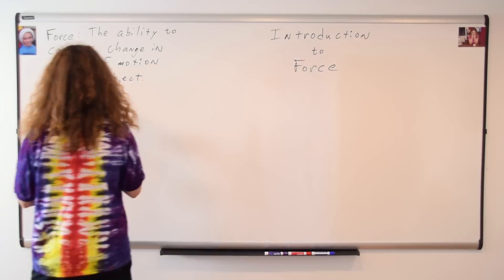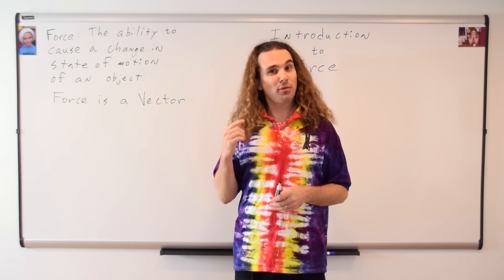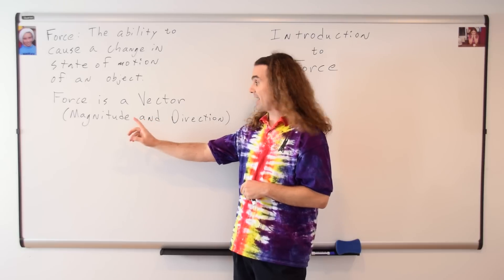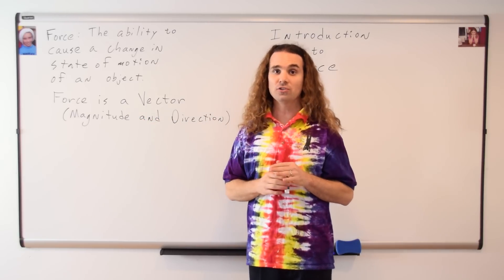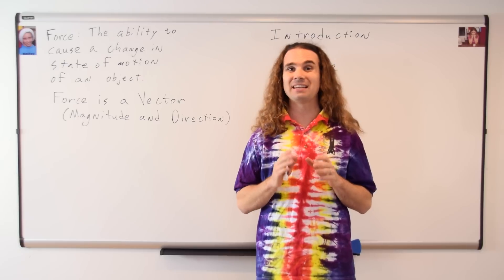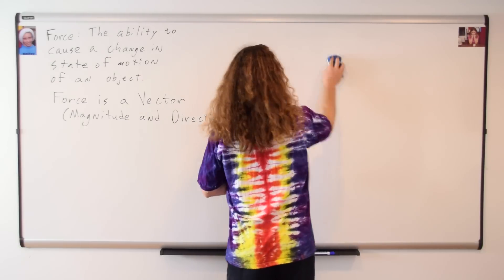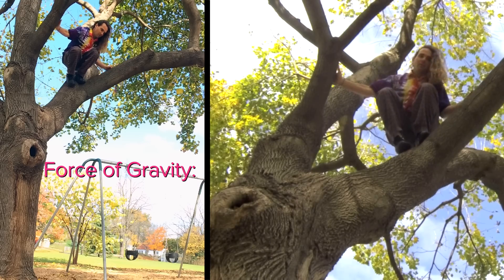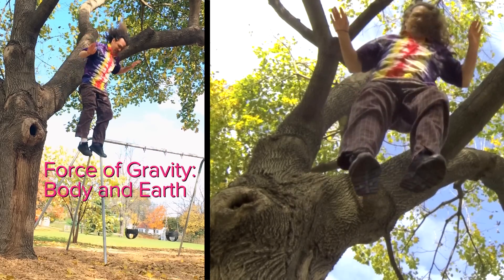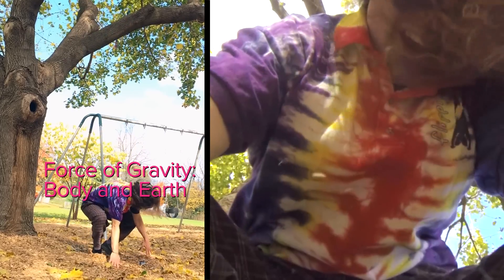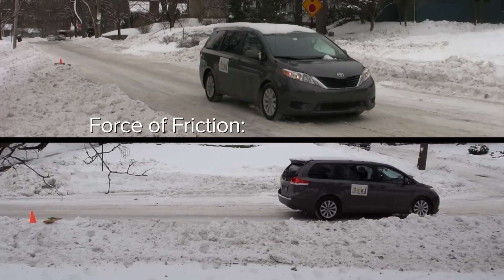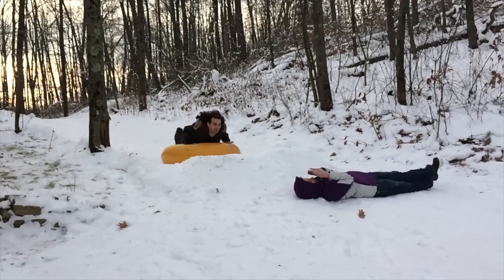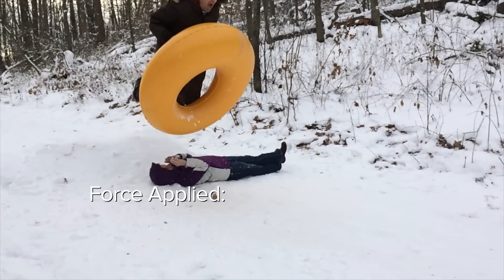Force is a vector, which means, class, it has both magnitude and direction. Please remember that force is a vector, and therefore has both magnitude and direction. Also know that a force is always the result of an interaction between two objects. For example, when I fall out of this tree, the force of gravity is the result of an interaction between my body and the Earth. When this car slides to a stop, the friction force is the result of an interaction between the tires and the ground. And when this sled lands on the ground, the force applied is the result of the interaction between the sled and the ground.